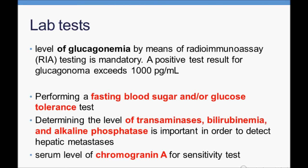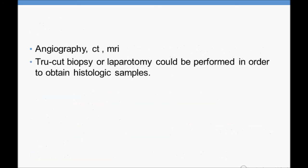For diagnosis, the first step is to measure the glucagon level in the body. Next, rule out diabetes mellitus using fasting blood sugar and glucose tolerance test. Also determine the levels of transaminases, bilirubin, and alkaline phosphatase to assess for hepatic metastasis. The serum level of chromogranin A is a recently developed sensitivity test.